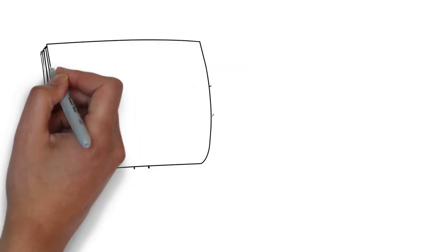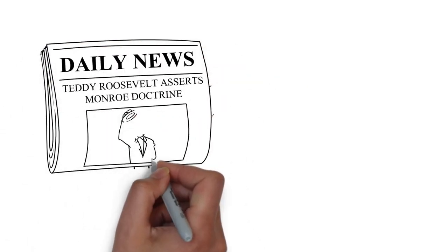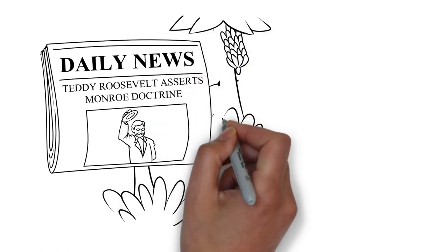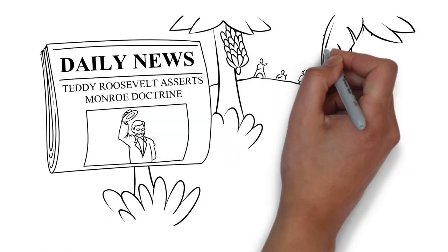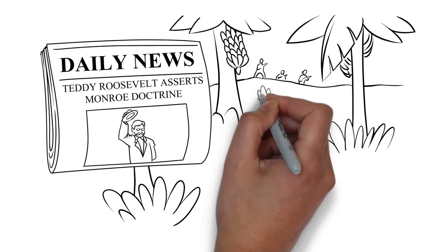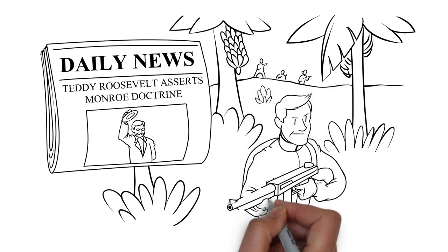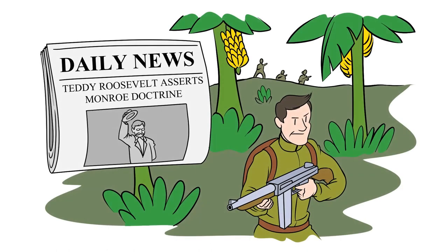Roosevelt announced his policy in 1904, retroactively justifying military actions already underway. A year earlier, the military had ordered Smedley Butler to Honduras to quell civil unrest. This began his participation in the Latin American conflicts known as the Banana Wars.